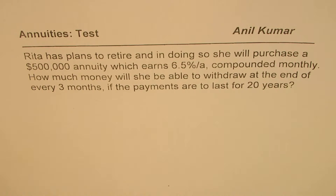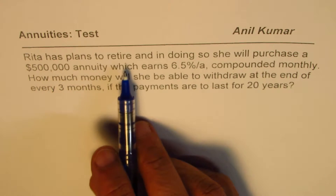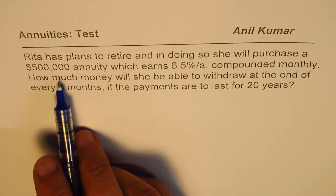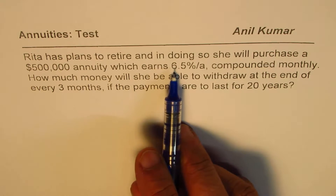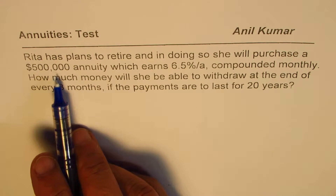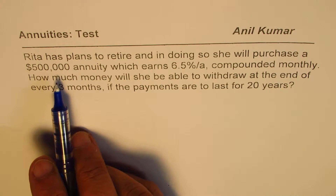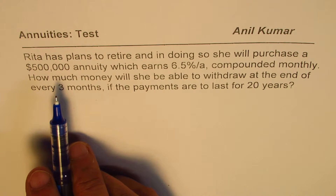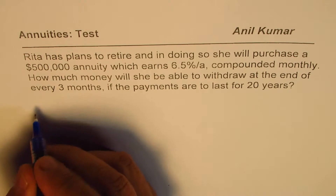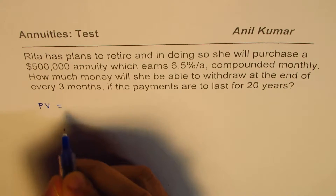In this case, you have to first figure out whether it is a case of present annuity or future annuity — that's very important to understand. When we say that Rita has plans to retire and will purchase a $500,000 annuity, this is what she is going to do now. Since she is going to do this now, we understand that this is a case of present value annuity.